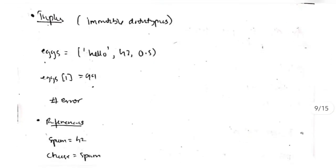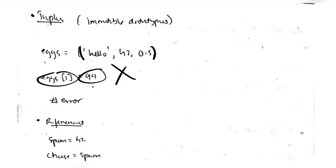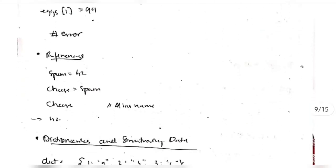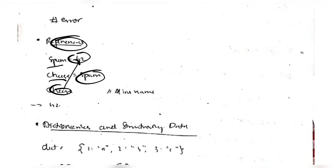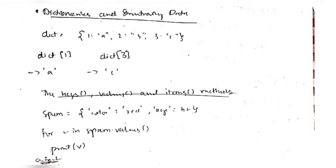Tuples are immutable data types — we can't edit the values. They are written within parentheses. If I write x[1] = 99 on a tuple, it will not be possible. References is just another name for the same variable — if spam = 42 and I write cheese = spam, then cheese will also point to 42. That is known as a reference.